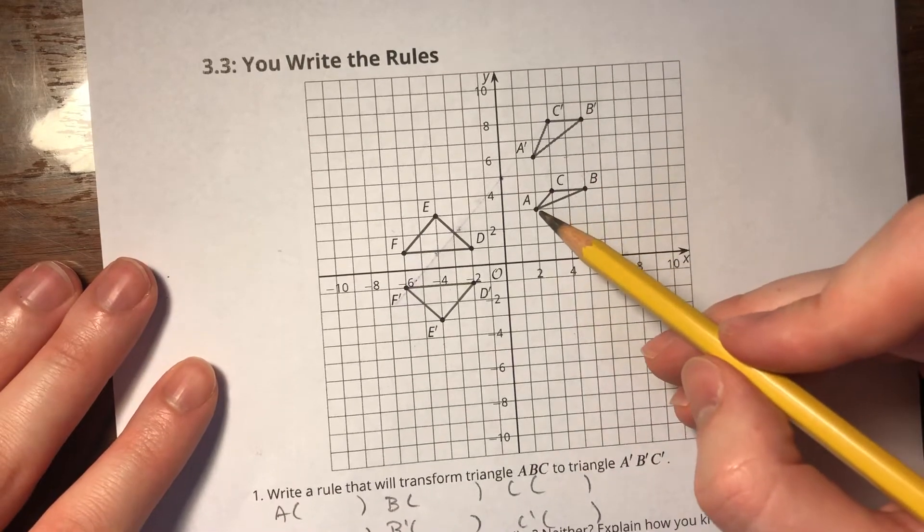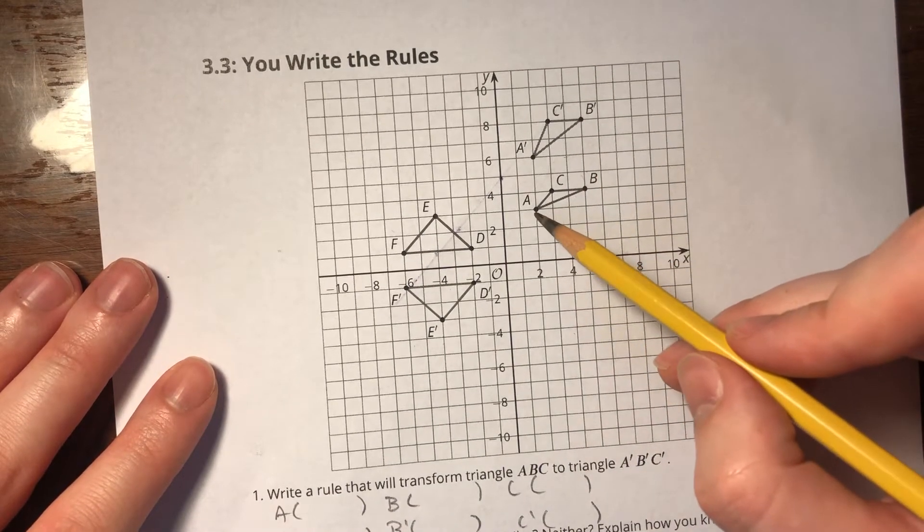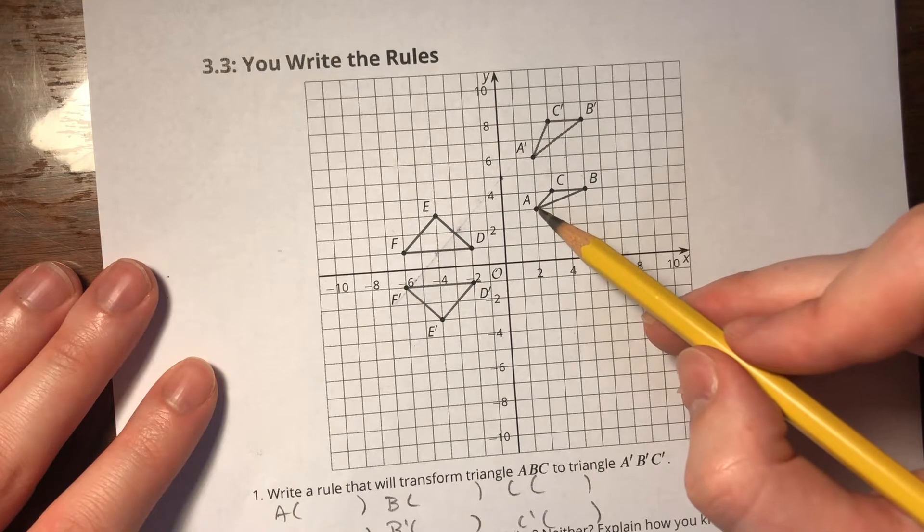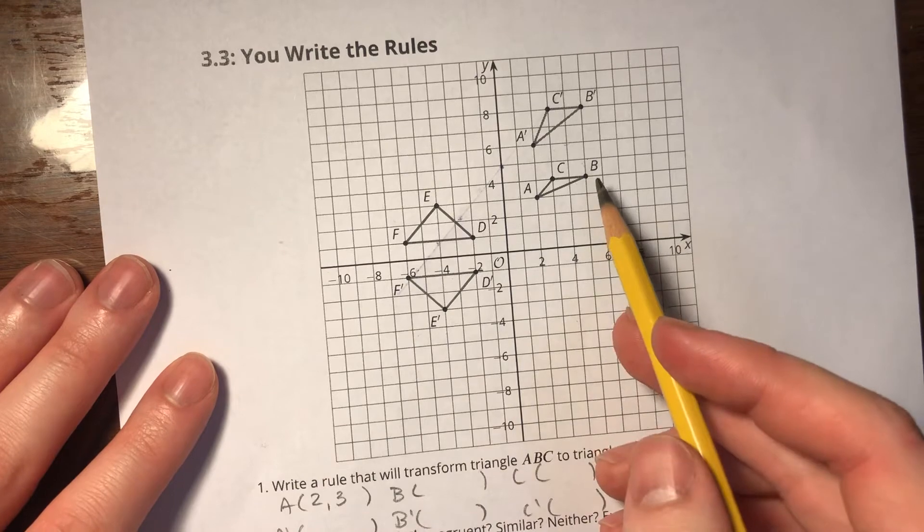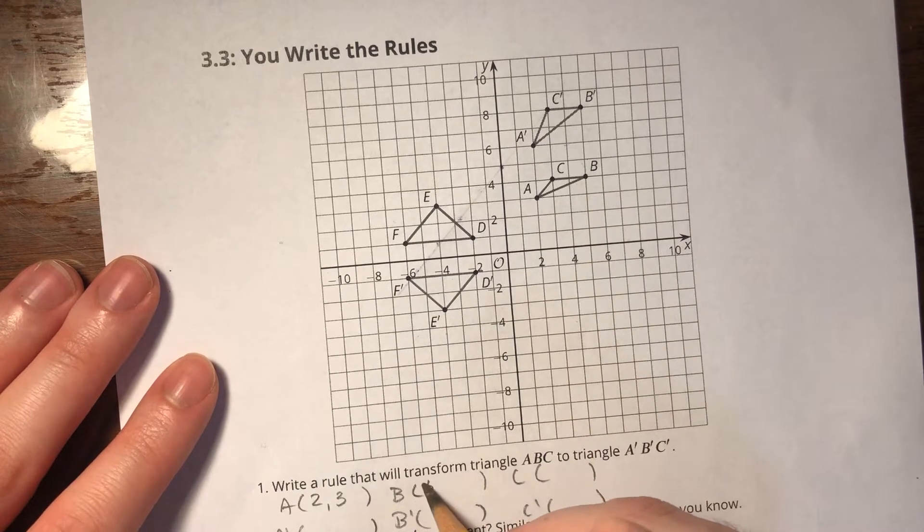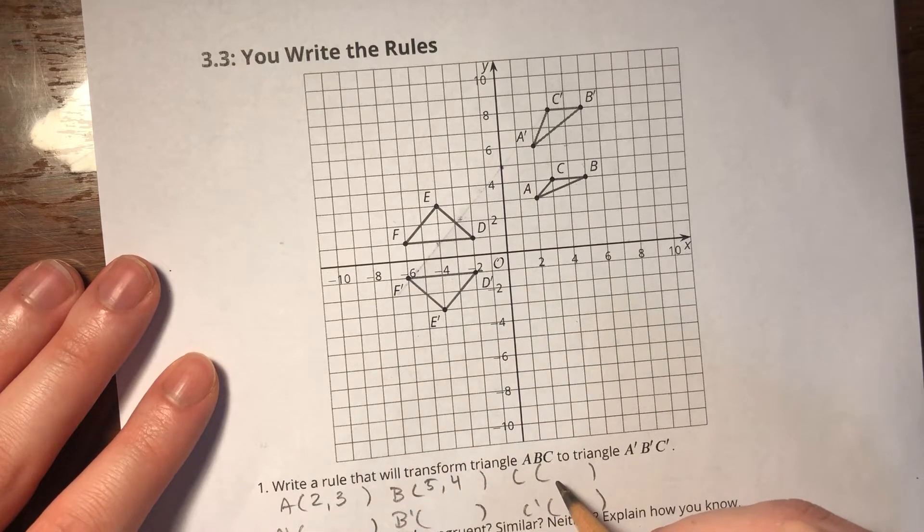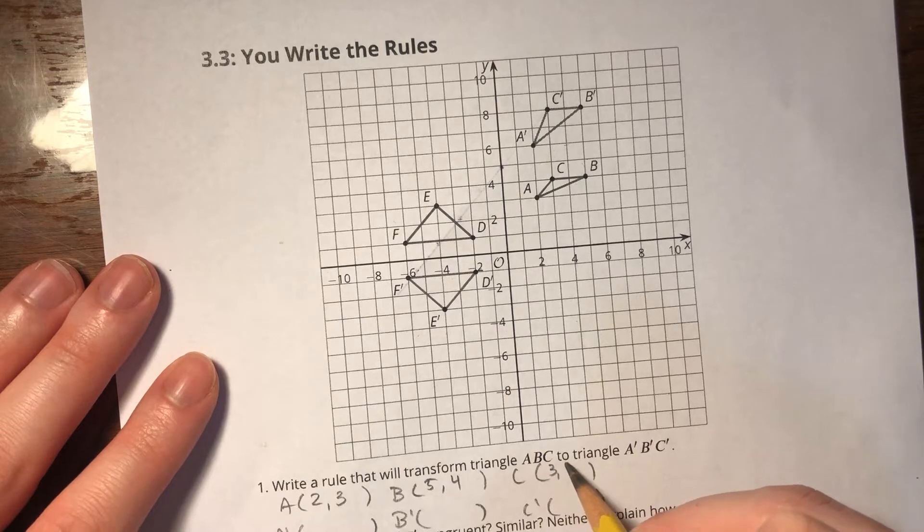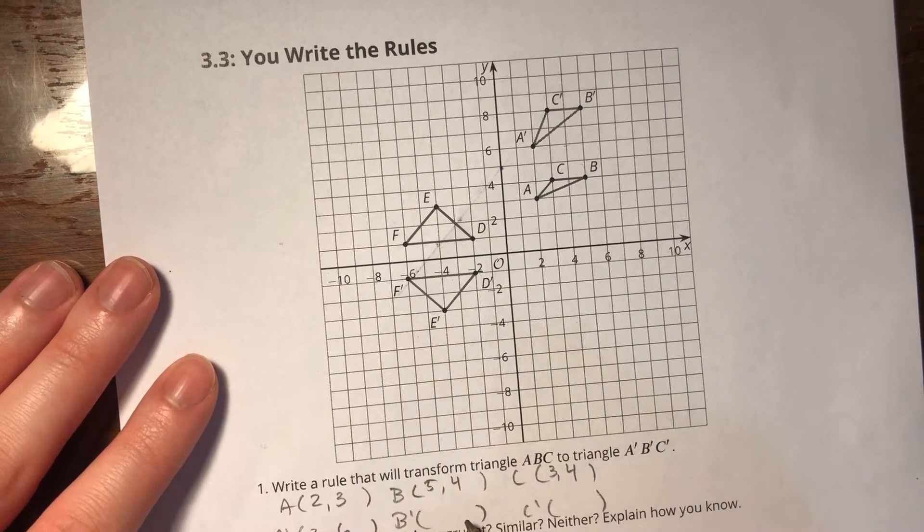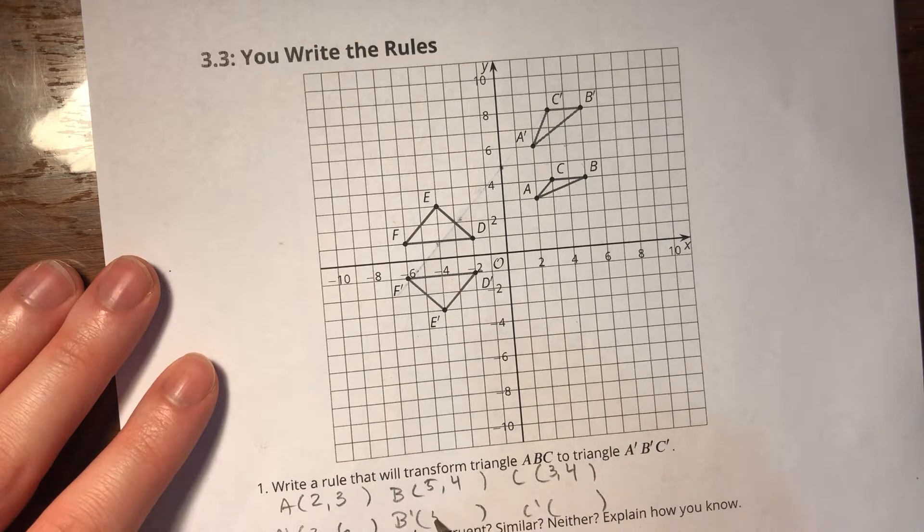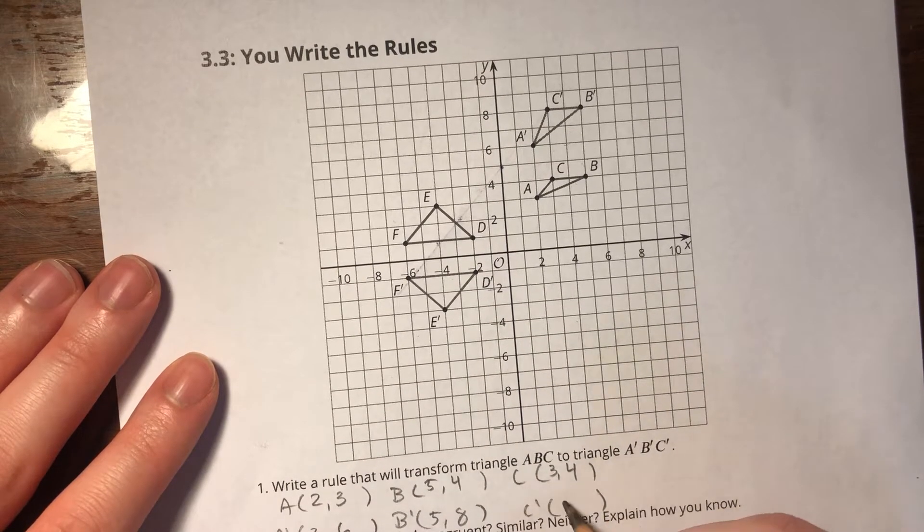So I'm going to look at A and I can see that A is at (2,3), B is at (5,4), and C is at (3,4). A' is at (2,6), B' is at (5,8), and C' is at (3,8).